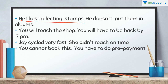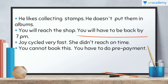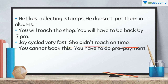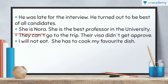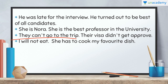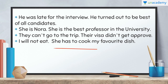He likes collecting stamps. He doesn't put them in albums. You will reach the shop. You will have to be back by 7pm. Joyce cycled very fast. She didn't reach on time. You cannot book this. You have to do prepayment. He was late for the interview. He turned out to be best of all candidates. She is Nora. She is the best professor in the university. They can't go on the trip. Their visa didn't get approved. I will not eat. She has to cook my favorite dish. These were the 12 sentences.